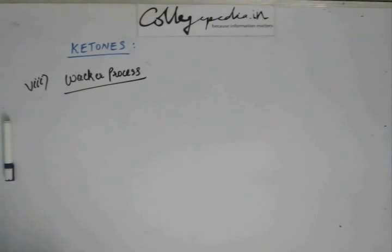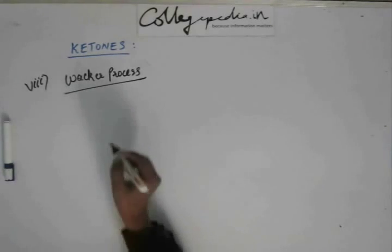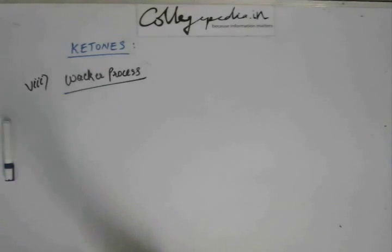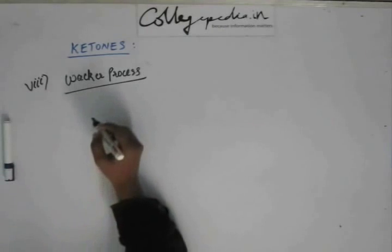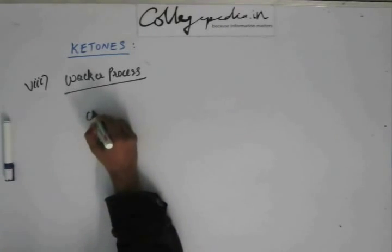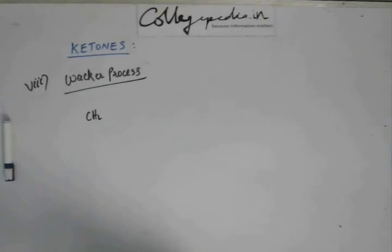The next reaction we are going to study is the Wacker process. The Wacker process is an important reaction for industrial chemistry, and historically it was developed to produce acetic acid.